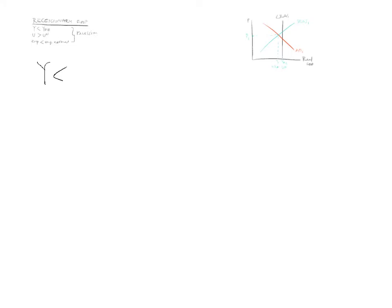We are producing less than normal. Unemployment is greater than the natural rate. People want to keep their jobs, and unemployed people want to get a job — they'd rather have a job than not. Assume there are no unemployment benefits, or very low levels. So what happens is there will be a lowering of wage demands, because you'd rather keep your job than lose it.